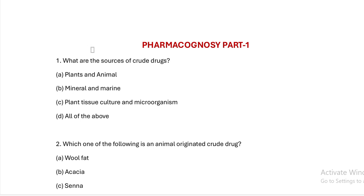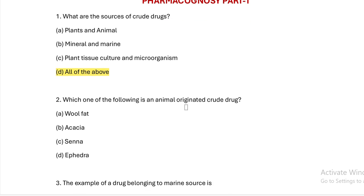First question: What are the sources of crude drugs? Option A: plant and animal. Option B: mineral and marine. Option C: plant tissue culture and microorganisms. Option D: all of the above. Answer — sources of crude drugs are all of the above.